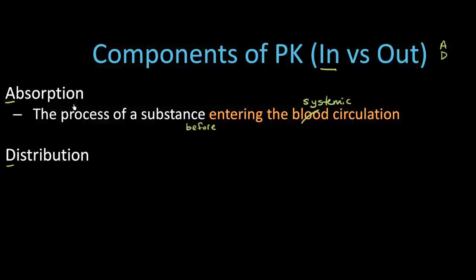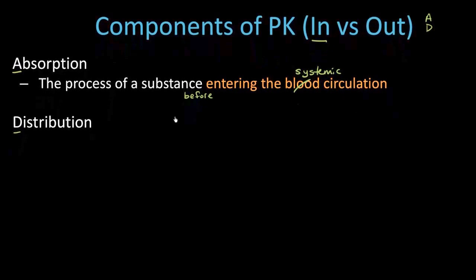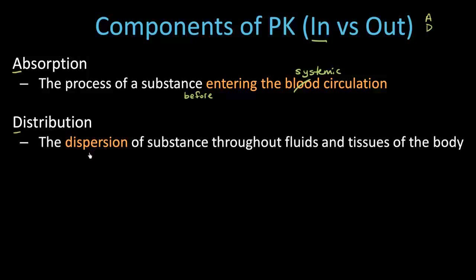To differentiate that from distribution: after a drug is in our systemic circulation, it can now be distributed to the rest of the body. So what is distribution? The dispersion of a substance throughout the fluids and tissues of the body. You don't really need a definition for distribution — it's going from one place to another.